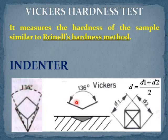When such an indenter is placed on the surface of the material and load is applied, a square-shaped impression is produced. The diagonal lengths of the square, d1 and d2, are measured from an optical microscope. The average diagonal length is calculated from the formula: d = (d1 + d2) / 2.